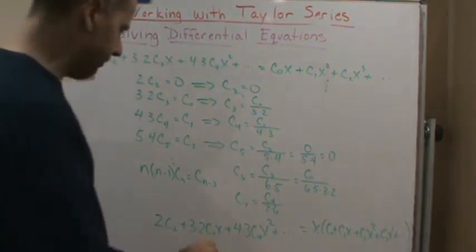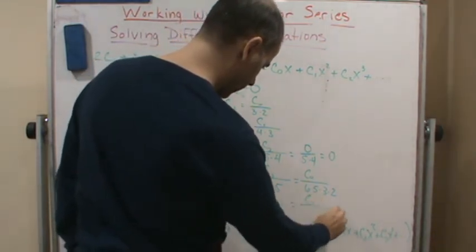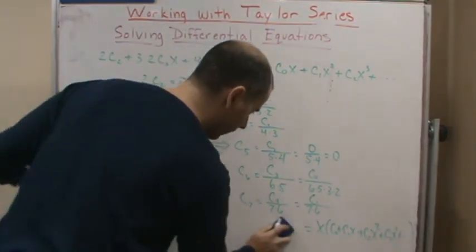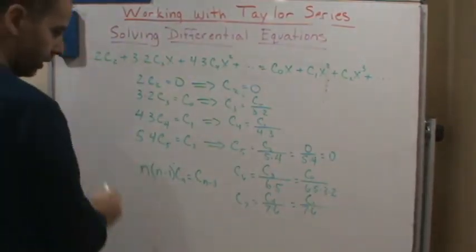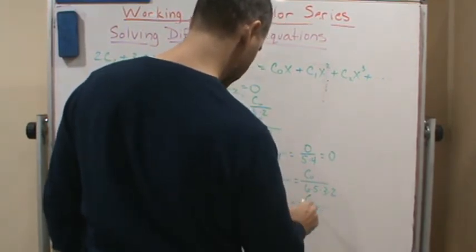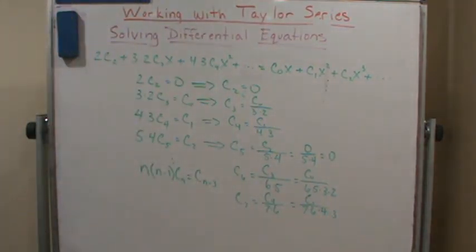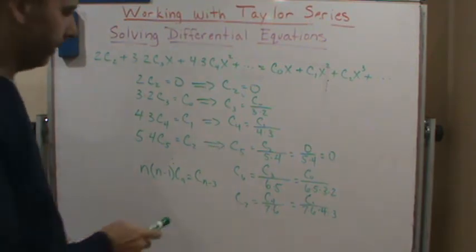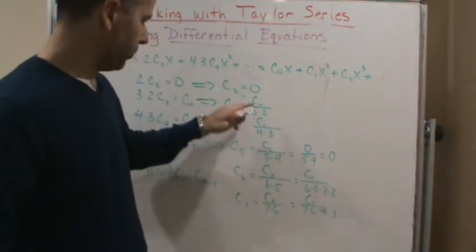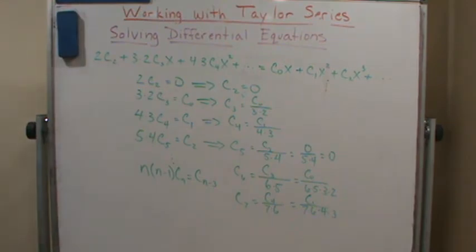Notice what's happening: c two equals zero, so c five equals zero over five times four, which is zero. c three equals c zero over three times two, so c six equals c sub zero over six times five times three times two. And c sub seven equals c sub one over seven times six times four times three. So we're getting a pattern: zero, then c zero terms, then c one terms, then another zero — the pattern repeats every three steps.